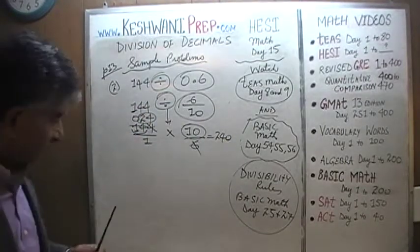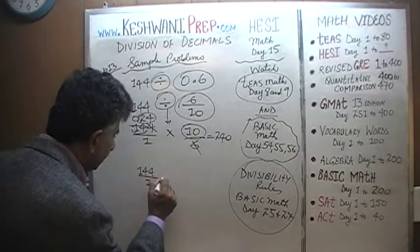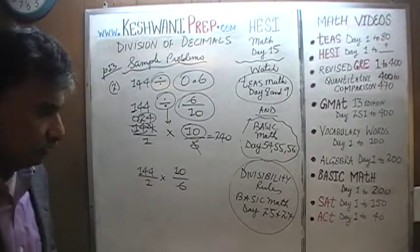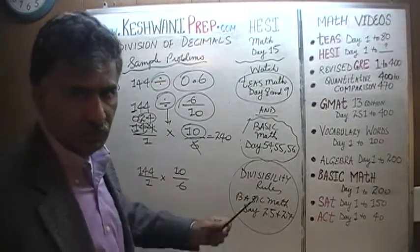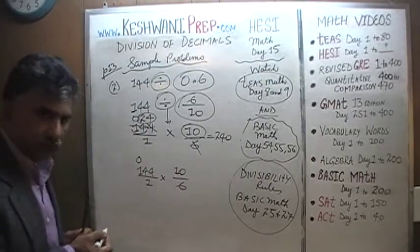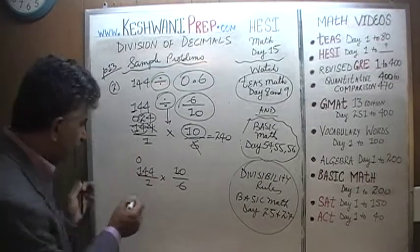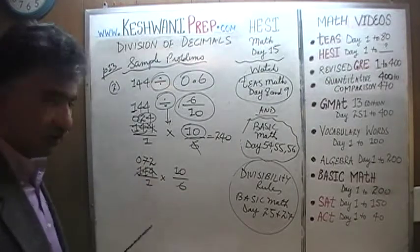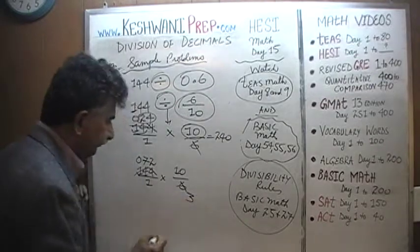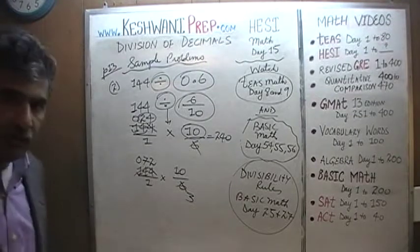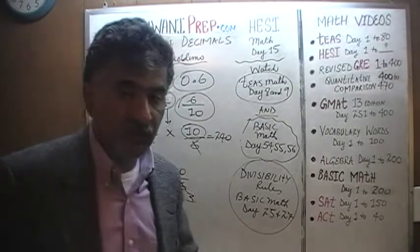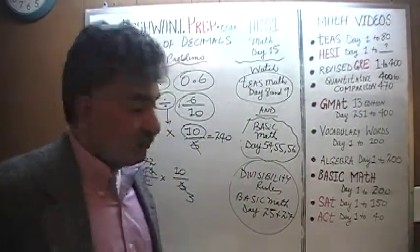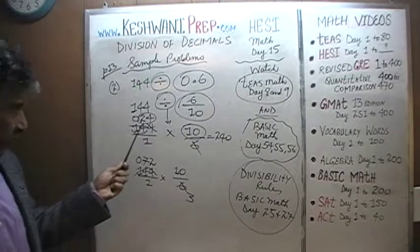If you want to do it in two steps instead, that is fine. You can divide by 2 first and then by 3. 144 divided by 2: 14 has seven 2s, and 4 has two 2s, giving 72. Since we divided the top by 2, divide 6 by 2 to get 3. Then divide 72 by 3: 7 has two 3s with a remainder of 1 that joins the 2 to make 12, which has four 3s. Again you get 24 times 10 — same result.